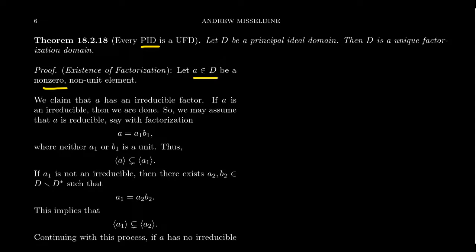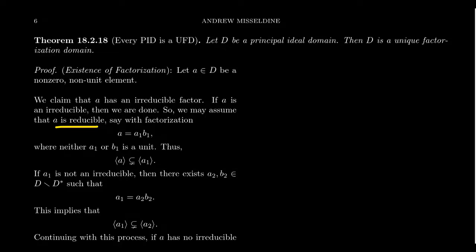We have to first prove A has a factorization of irreducibles, then prove that factorization is unique — that two different factorizations are actually the same thing. The first claim is that A has an irreducible factor. If A were irreducible, it would be a factor of itself (factor A as 1 times A), so we'd be done. So we can assume A is reducible. Therefore, it has a factorization A = A₁ · B₁, where neither A₁ nor B₁ is a unit.